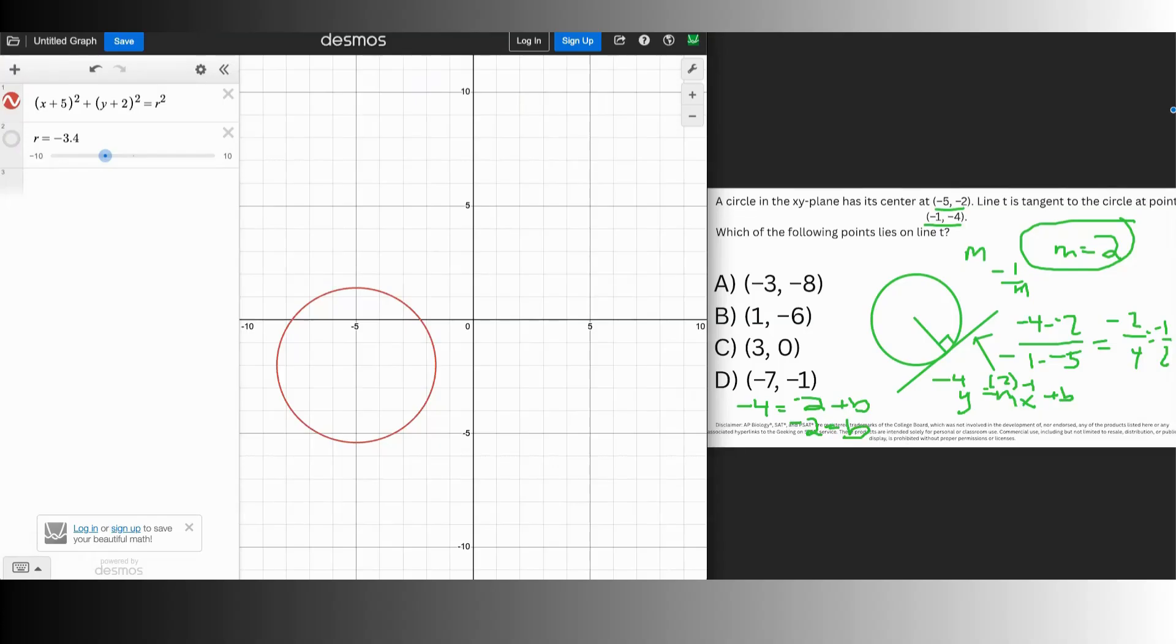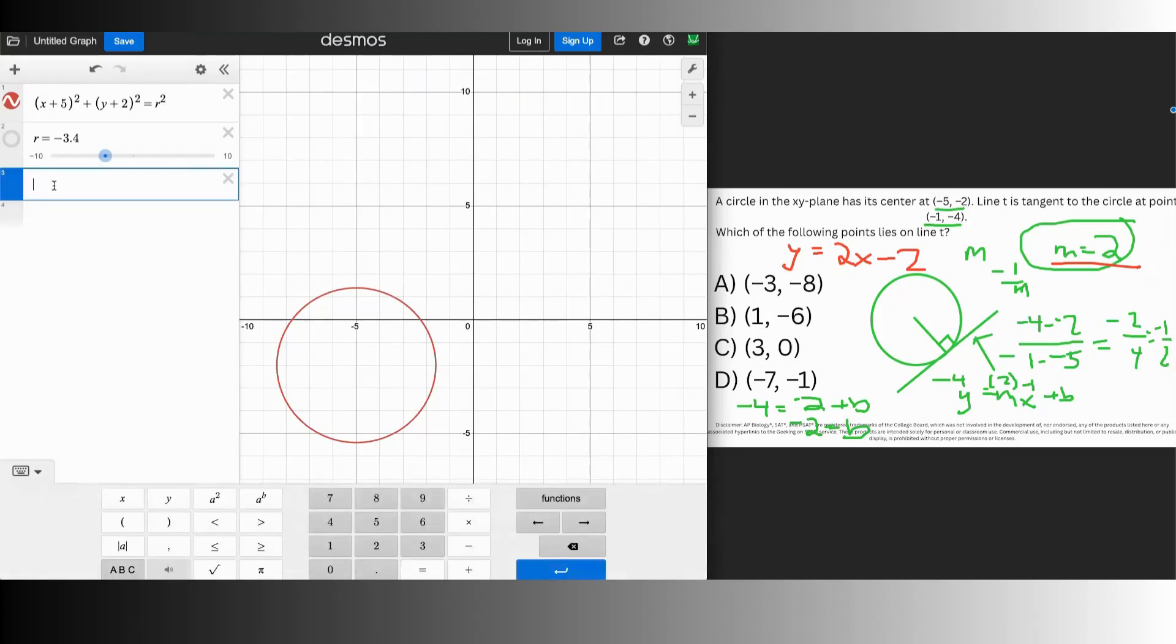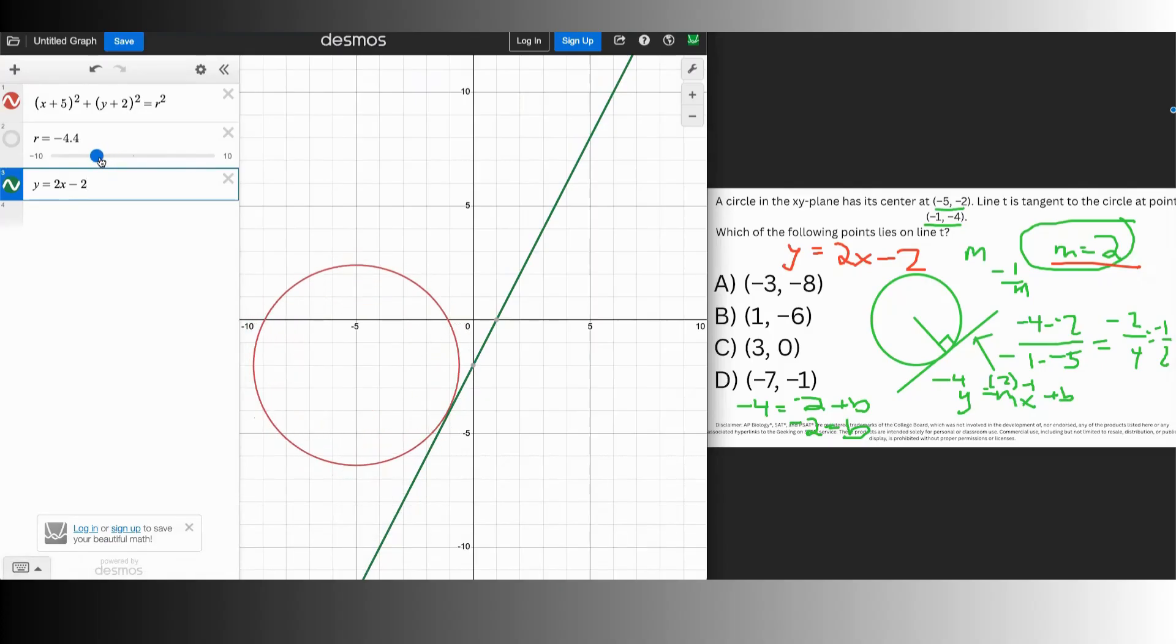Now we can use y equals mx plus b. We can plug in negative 1 for x and negative 4 for y and 2 for m to solve for b. I know this is negative 4 and this is going to be negative 2 plus b. When I bring over negative 2 to the other side, I solve for b, which is negative 2 equals b. So I know y equals 2x minus 2, and that's my tangent line. So I'm going to go ahead and plug that in.